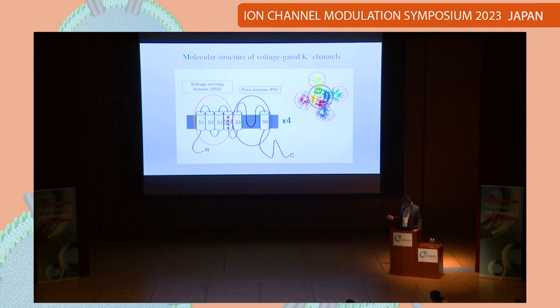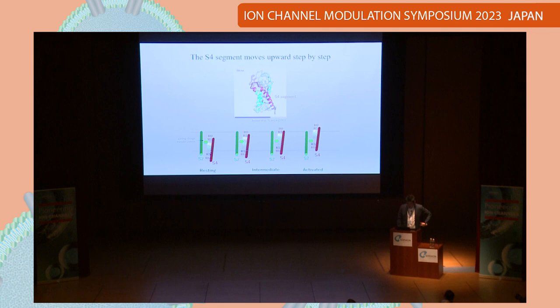Because this is an alpha subunit, four alpha subunits can form a single ion channel. As you can see here, it has a single pore domain and four independent voltage-sensing domains.